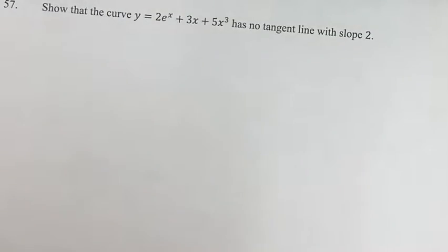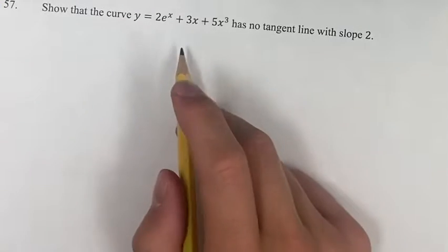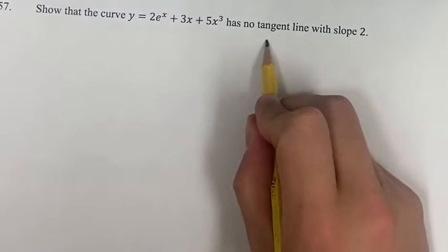Hello and welcome back to another video. In this problem, we're asked to show that this curve, y equals 2e to the x plus 3x plus 5x cubed, has no tangent line with slope equal to 2.